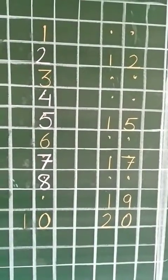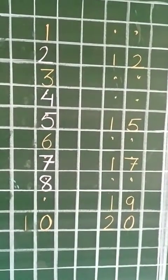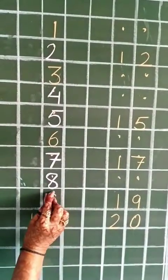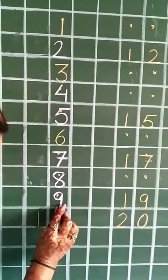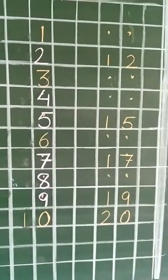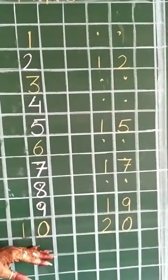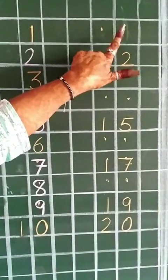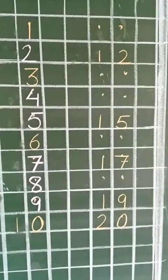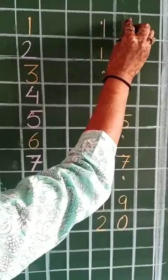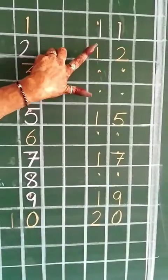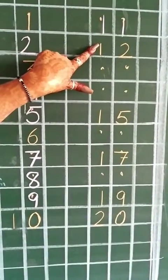And now in the next box no number is written, so we have to write a number here. We will write nine. In the next box, ten is written, so we don't have to write any number. What comes after ten? This box is empty, so we will write the next number. Ten ke baad kya aata hai? Eleven, one one, eleven.